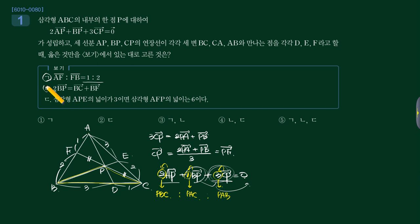그 다음 삼각형 AP 넓이가 3이면, 여기 넓이가 3이면 여기 비가 3대 2니까 여기 넓이는 2가 되겠죠. 그러면 여기 길이가 같으니까 AFP의 넓이는 5가 되어야 되겠죠.